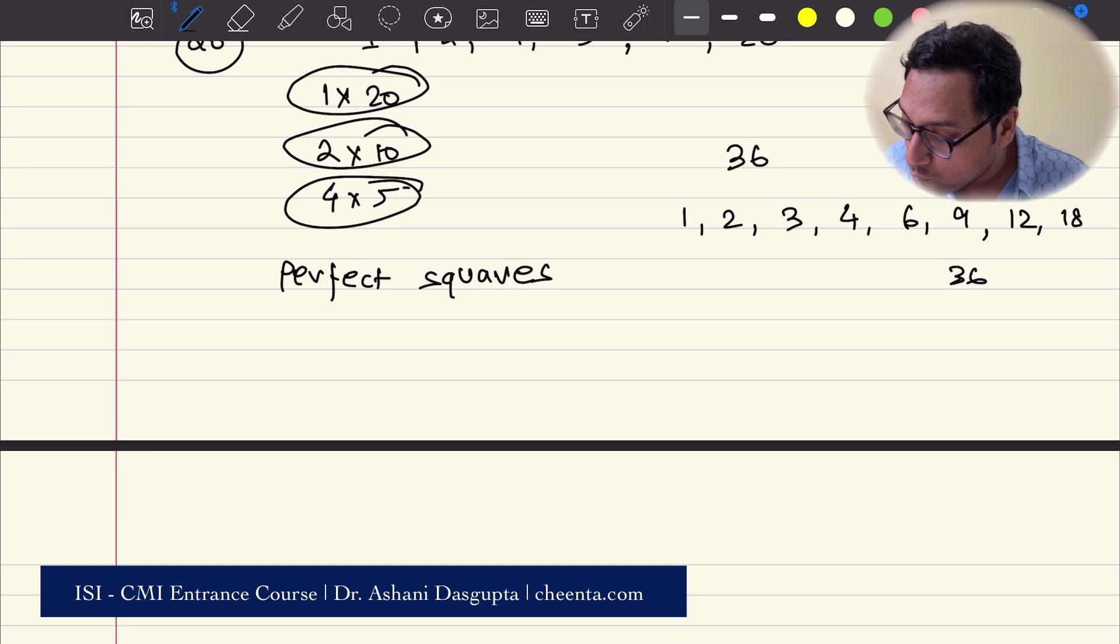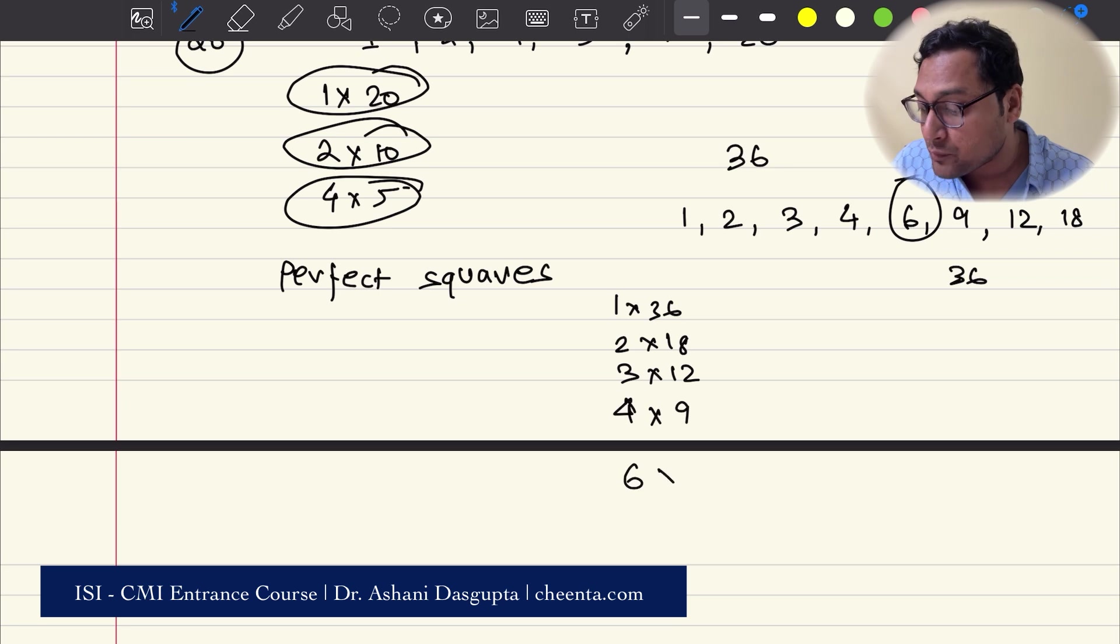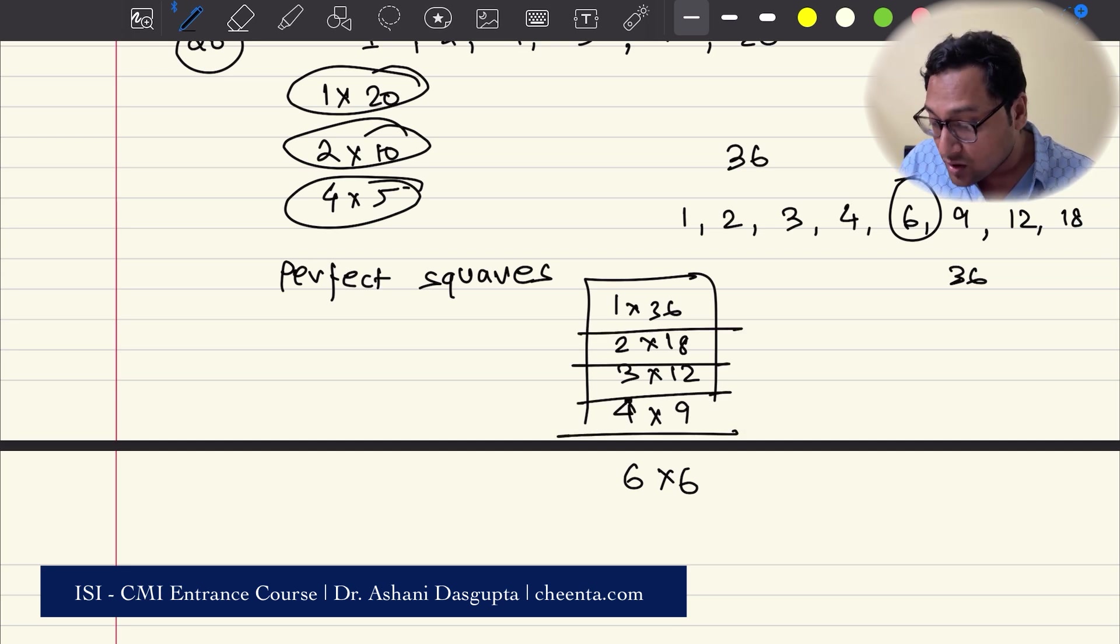And the last number, 6 is paired up with 6 to get 36. So you have odd number of divisors because all of these are pairs and one of them has only one divisor. That's 6. So 27 divisors means that's also a perfect square. Alright.